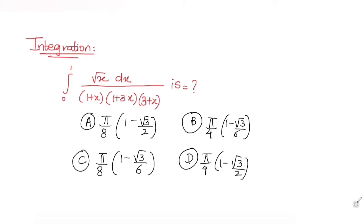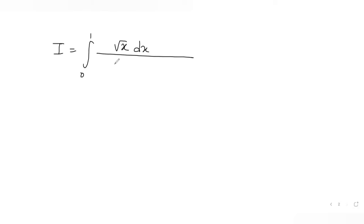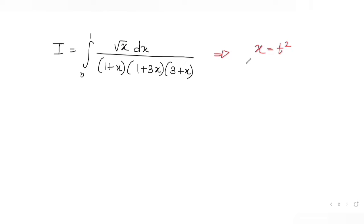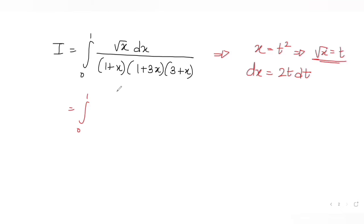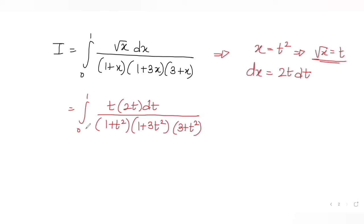So I equals the integral from 0 to 1 of √x dx divided by (1+x)(1+3x)(3+x). To simplify, I substitute x = t², so dx = 2t dt. Then √x becomes t. The integral becomes ∫ t · 2t dt / [(1+t²)(1+3t²)(3+t²)], giving 2t² dt in the numerator.